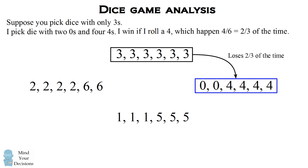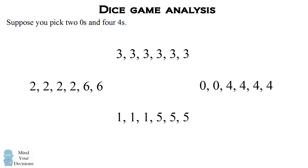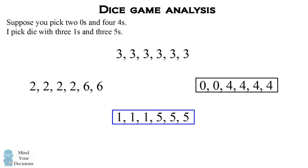So now suppose you know this strategy, and you say, Well, why don't I pick the dice that has two zeros and four fours? Well, if you're going to pick that dice, then I'm going to go ahead and pick the dice which has three ones and three fives. It's a little harder to analyze what happens when we roll these two dice against each other, but it's not too complicated.